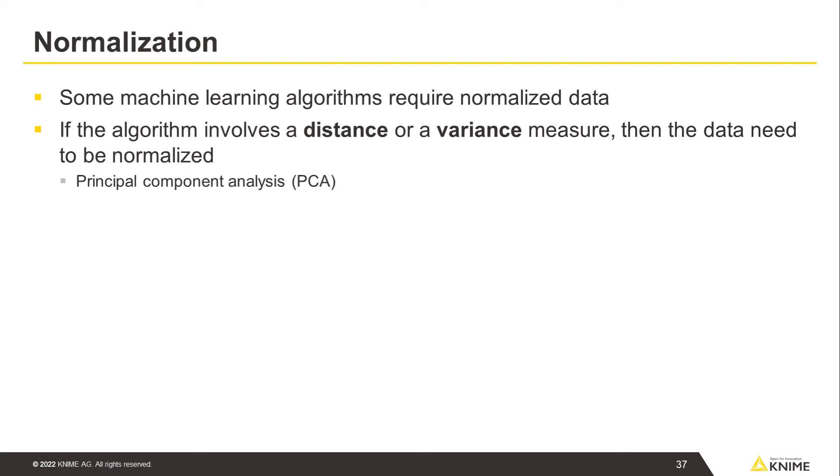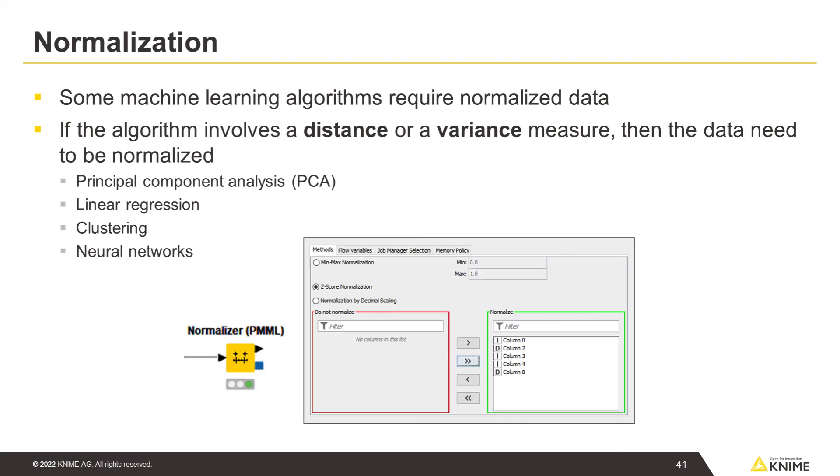For example, the principal component analysis is based on a variance measure. Linear regression is based on a mean squared error. And most clustering procedures are based on a distance measure. Besides those, neural networks also require an input in the 0-1 range. With the normalizer node, we can perform three types of normalization.